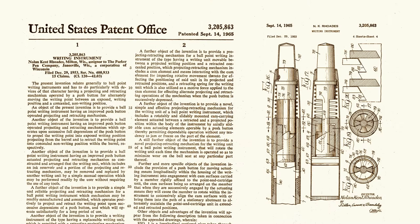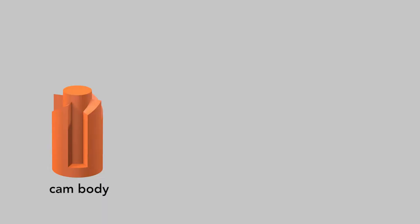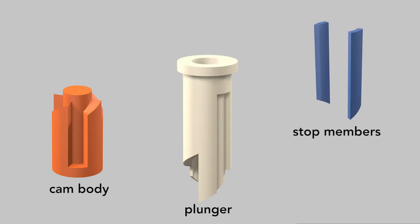A Parker Pen Company patent describes the three parts that produce the pen's click. The cam body, the tubular plunger, and the stop members.